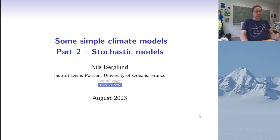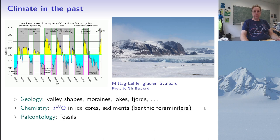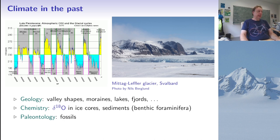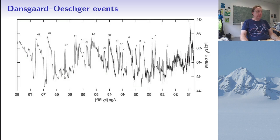Let me start by giving a recap of part one. I talked about climate in the past and in particular ice ages. We are currently in the quaternary ice age but we are in an interglacial phase called the Holocene. Climate data show that over the last several hundred thousand years there has been this alternation between interglacial and glacial phases, and this we know thanks to data in geology and chemistry — the analysis of ice cores, marine sediments, and paleontology. If you zoom in on the last glaciation, you'll see there have been warming events called Dansgaard–Oeschger events, so the behavior of the system is quite complicated.